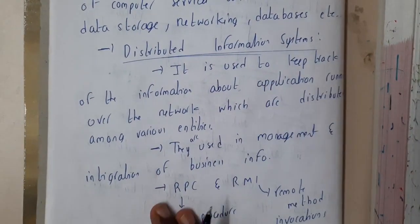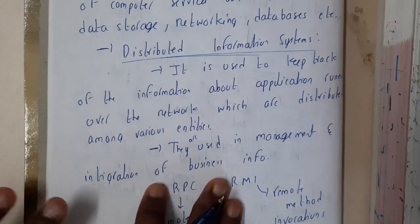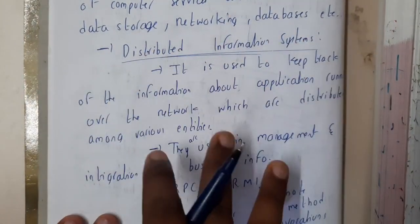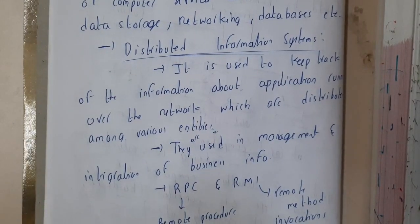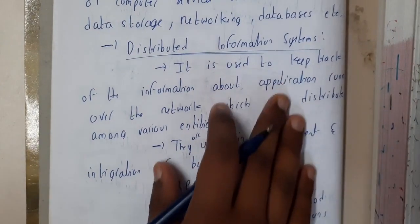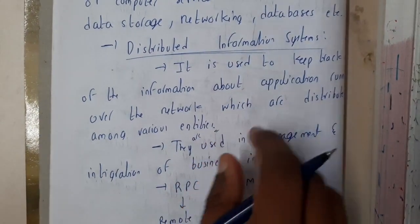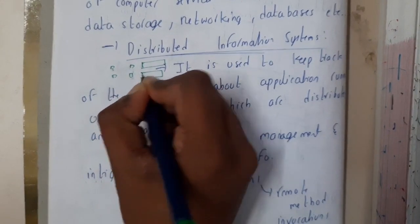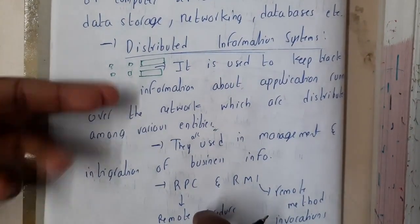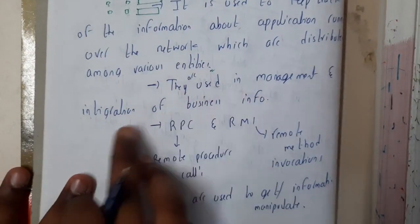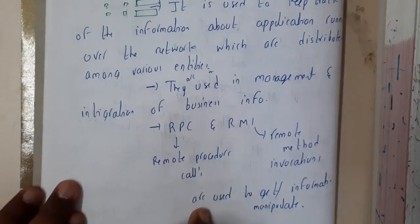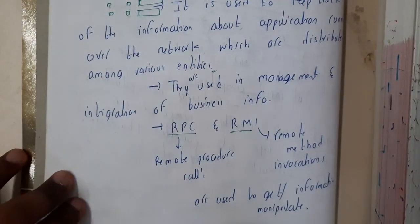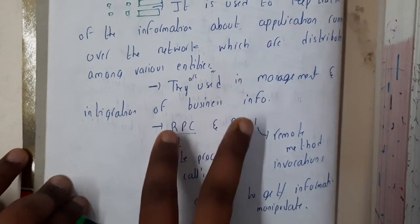Now let us go through the distributed information system. It is used to keep track of information about applications running over the network which are distributed among various entities. If there is a huge network with data shared between multiple systems, you need to store information about who owns which file and who it is shared with — that storage is done in the distributed information system. They use remote procedure calls (RPC) and remote method invocations (RMI) to achieve this, which we will discuss in detail in upcoming lectures.